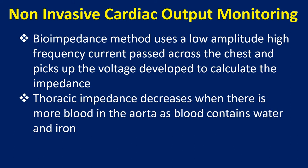The bioimpedance method uses a low amplitude, high frequency current passed across the chest and picks up the voltage developed to calculate the impedance. Thoracic impedance decreases when there is more blood in the aorta, as blood contains water and iron.